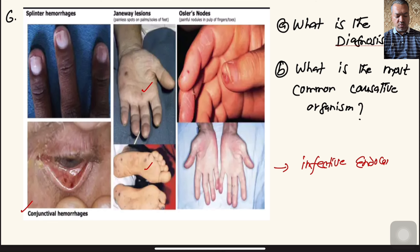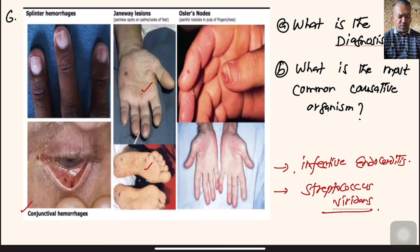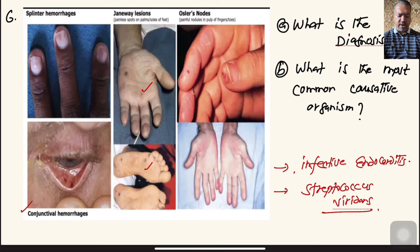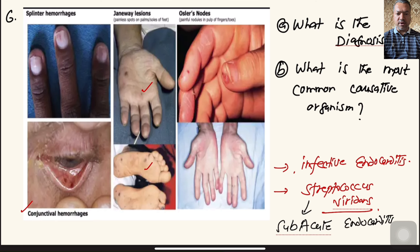The most common causative organism for infective endocarditis is Streptococcus viridans group, commonly found in the oral cavity. Infective endocarditis is mainly of two bacterial types: acute and subacute. The subacute variety is more common, and Streptococcus viridans usually causes subacute endocarditis. Acute infective endocarditis is mainly caused by Staphylococcus aureus — a common exam question.